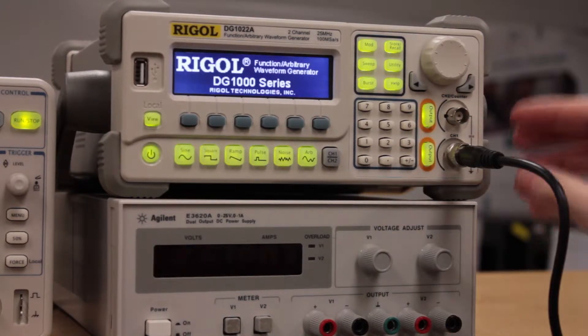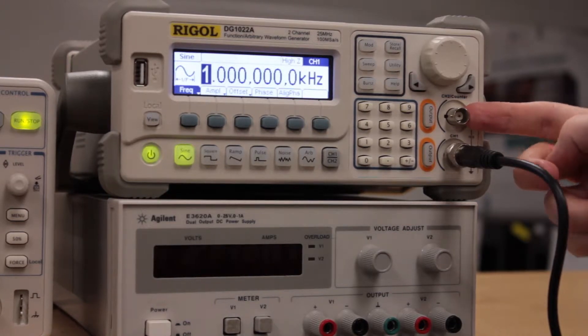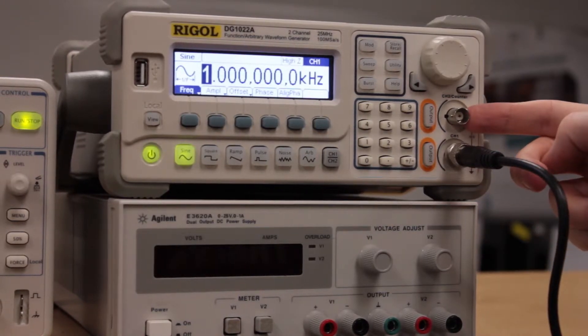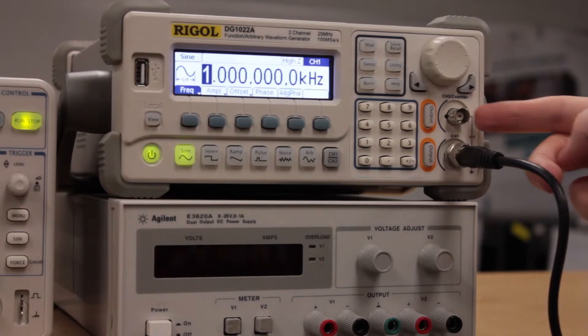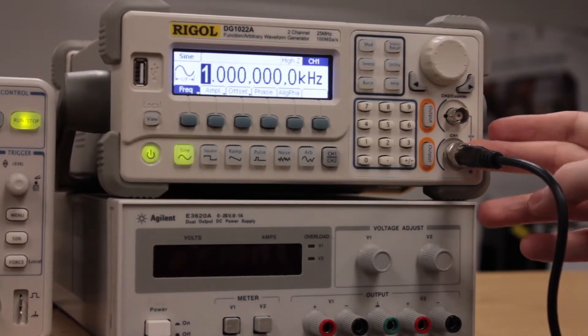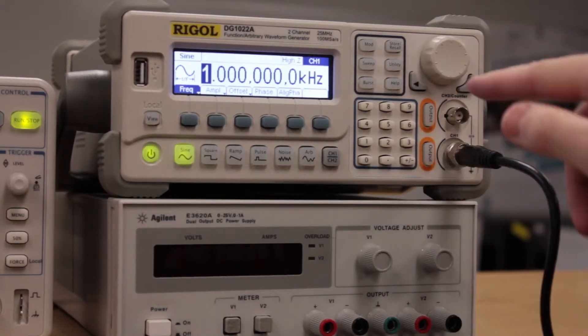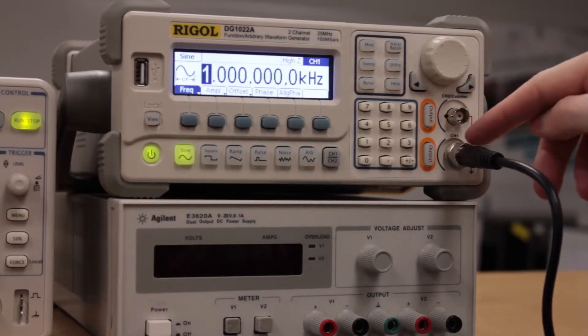This is channel one here and this is channel two, but it's a TTL counter which means you only get a square wave out of it that coincides with the sine wave or whatever is coming out of channel one. By default the outputs are off, so you're going to push the output button to turn this on once you have your settings set up.